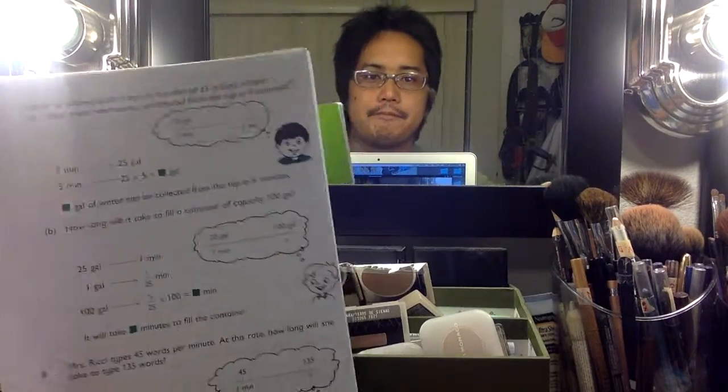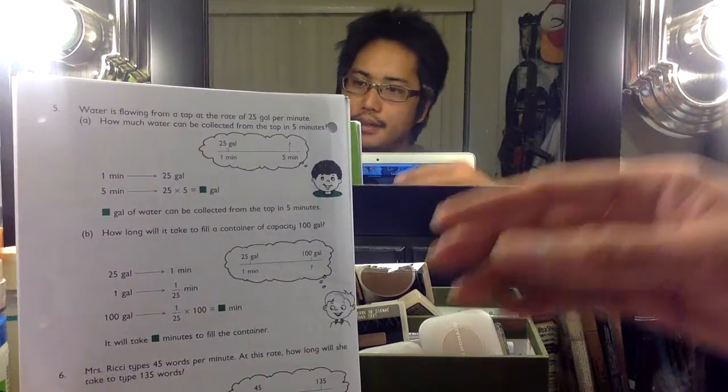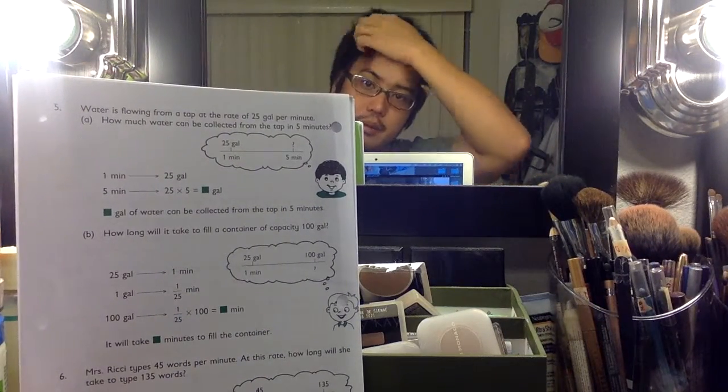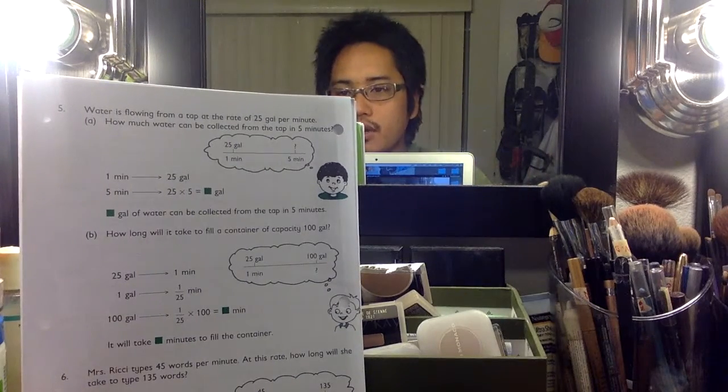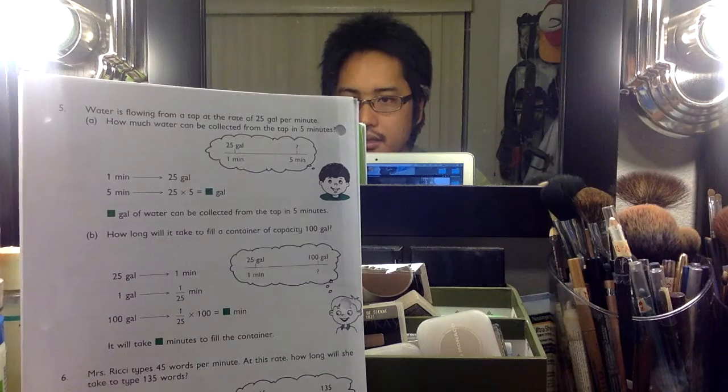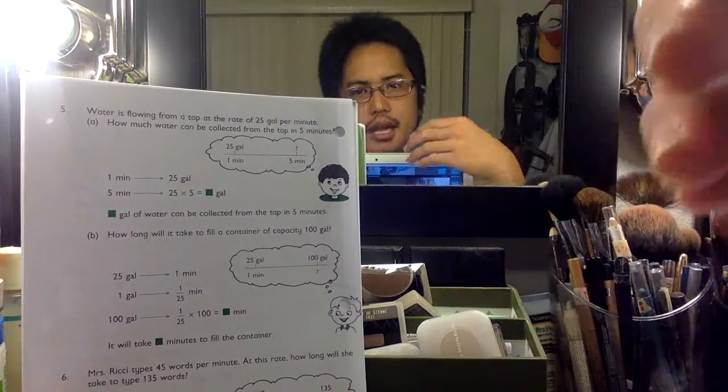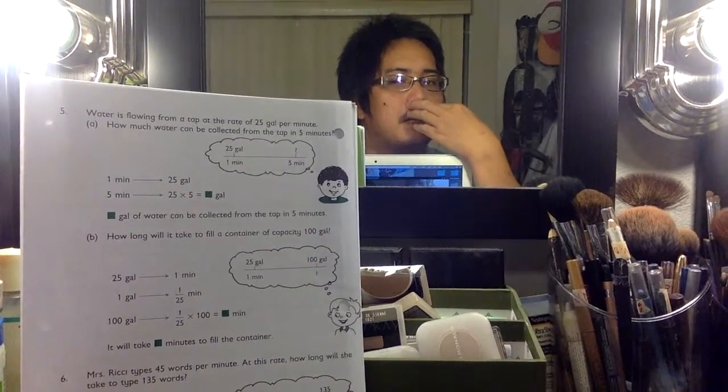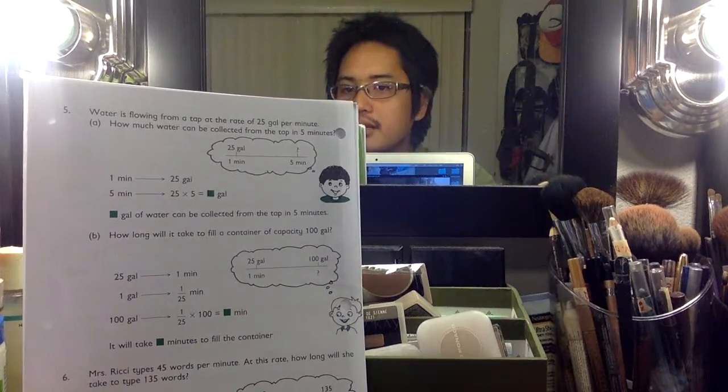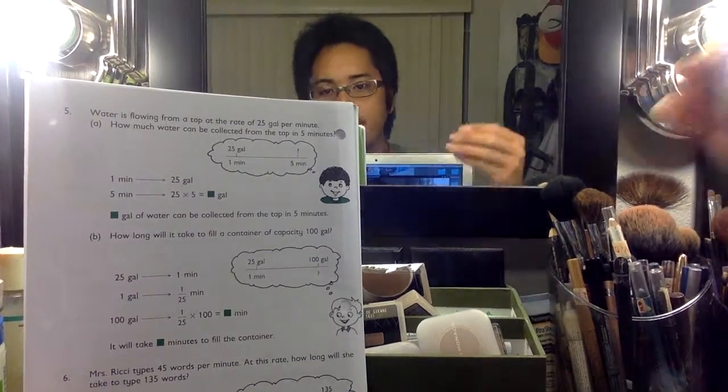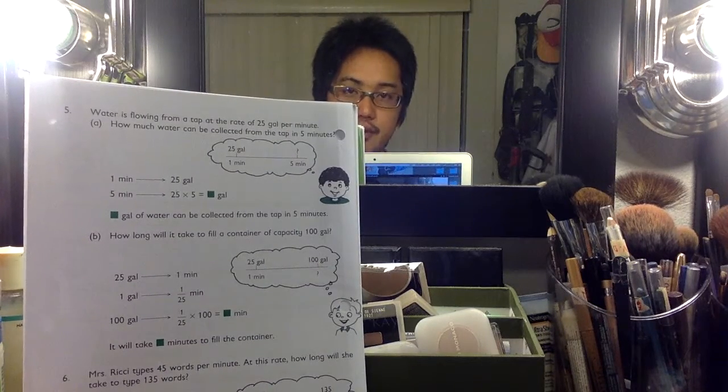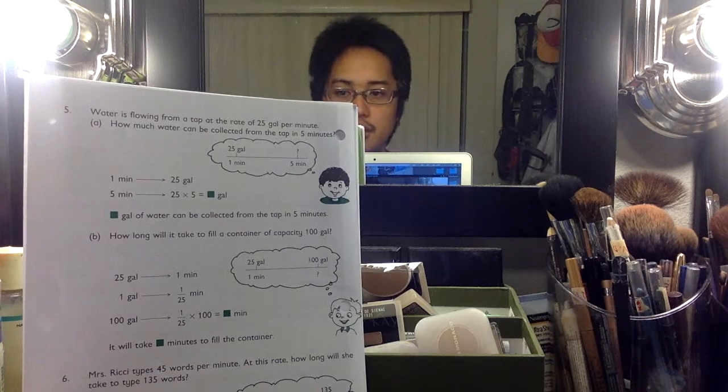Here's what we got. Water is flowing from a tap at a rate of 25 gallons per minute. How much water can be collected from the tap in five minutes? Okay, so if every minute it's flowing 25 gallons, then five minutes would just be five times that amount, so it would